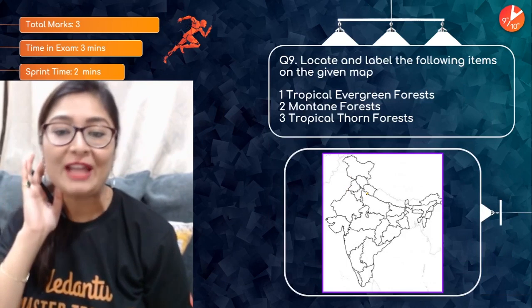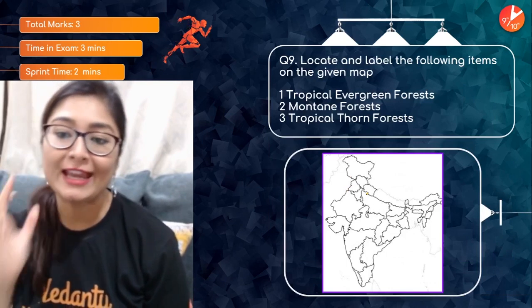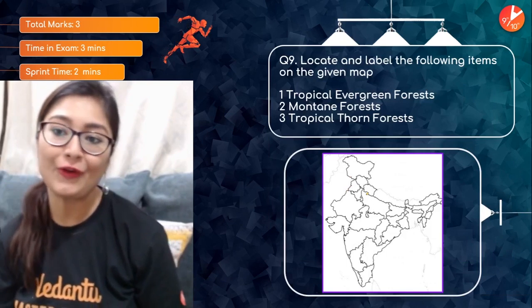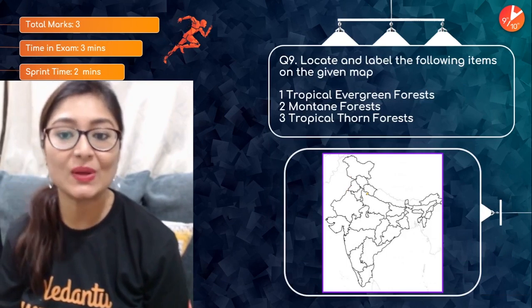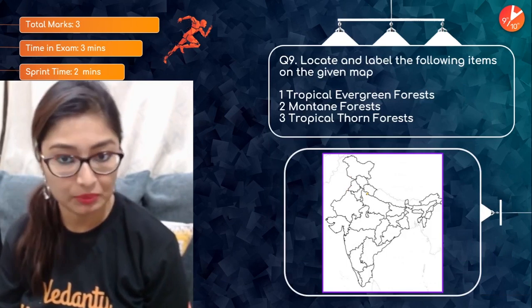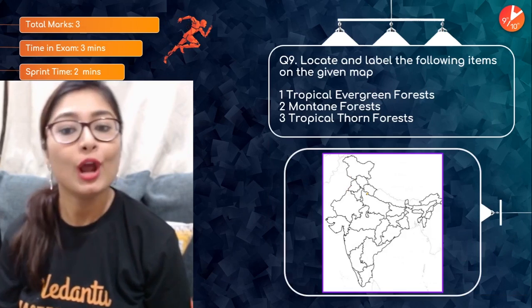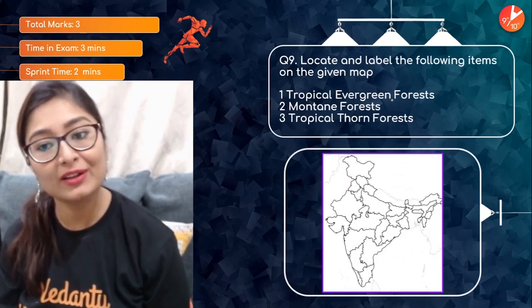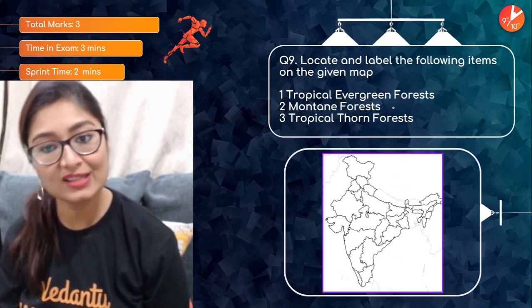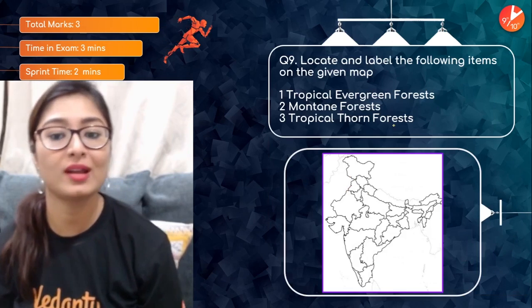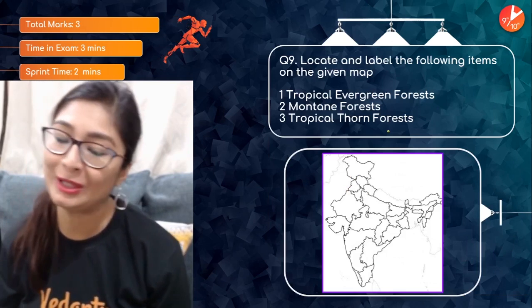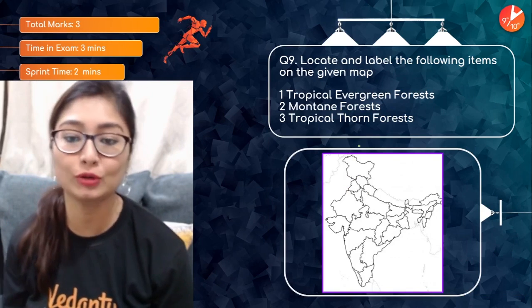Moving on: locate and label tropical evergreen forest, mountain forest, and tropical thorn forest on the given map. These are three distinct forest types found in different regions of India.